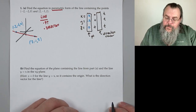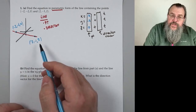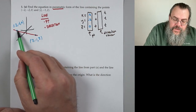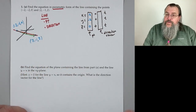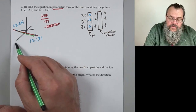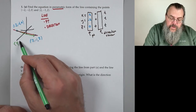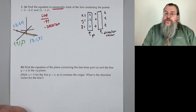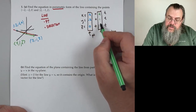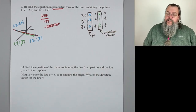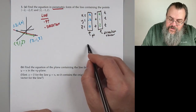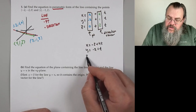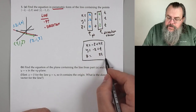For the point, we have choices — it doesn't matter which one we pick. Let's use (−2, −2, 0). For our direction, we go from (−2, −2, 0) to (2, −1, 2): we went up by 4 in x, up by 1 in y, and up by 2 in z. So 4, 1, 2 is our direction vector. Rewriting cleanly: x = −2 + 4t, y = −2 + t, z = 0 + 2t.